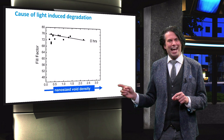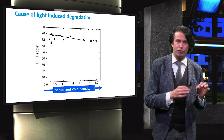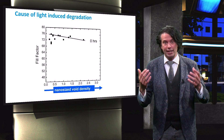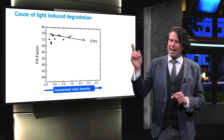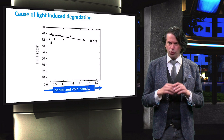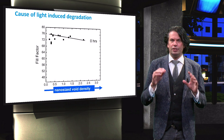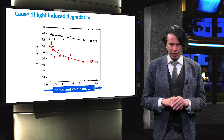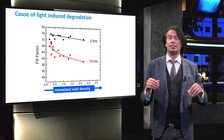On the horizontal axis we have measured a parameter that reflects how much voids are in the amorphous silicon layers — many voids means less dense material, a few voids means dense material. The vertical axis shows the fill factor after deposition. All cells were thermally annealed before the experiment started. Now the solar cells are light soaked under standard test conditions for 10 hours.